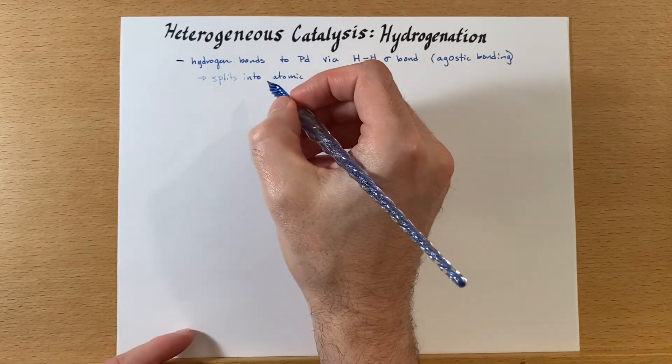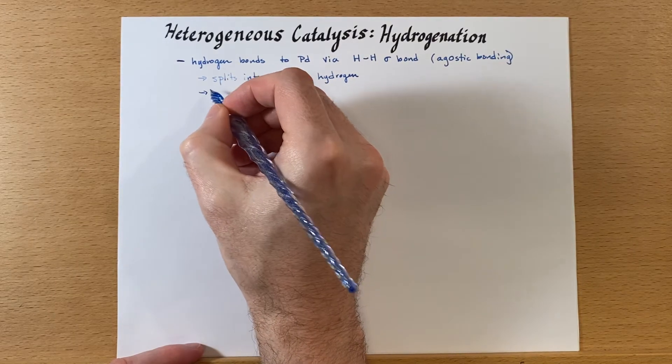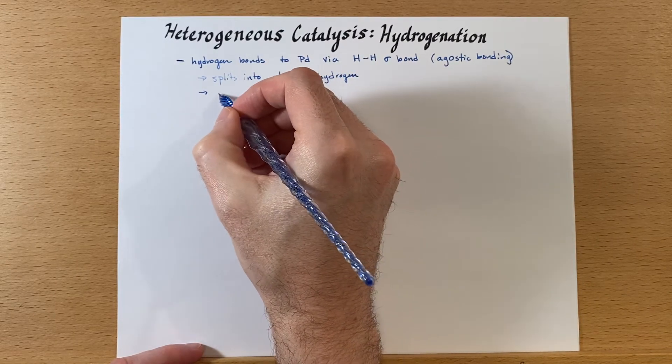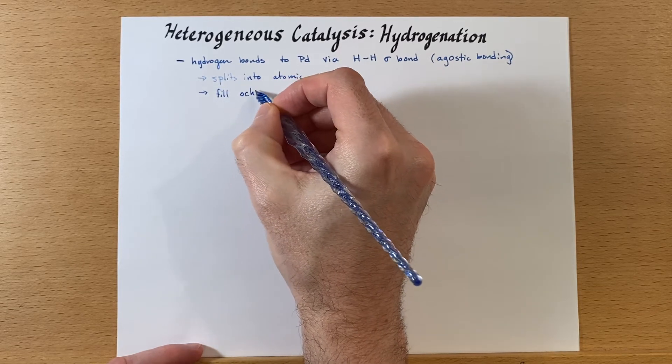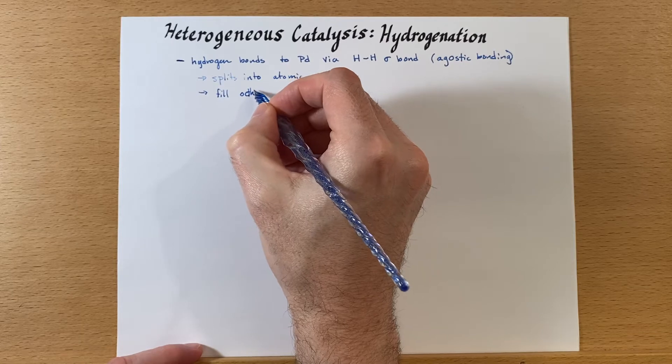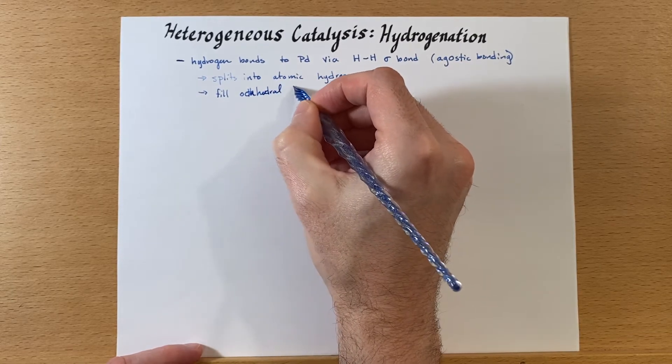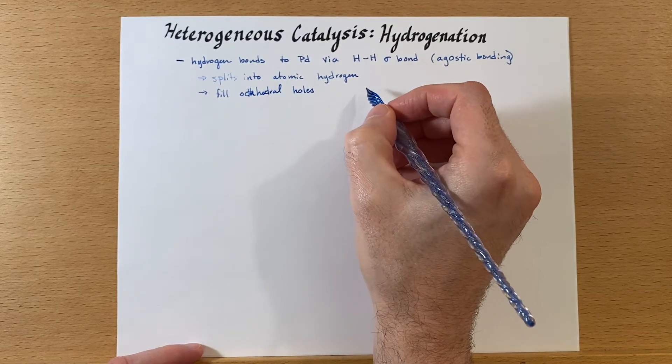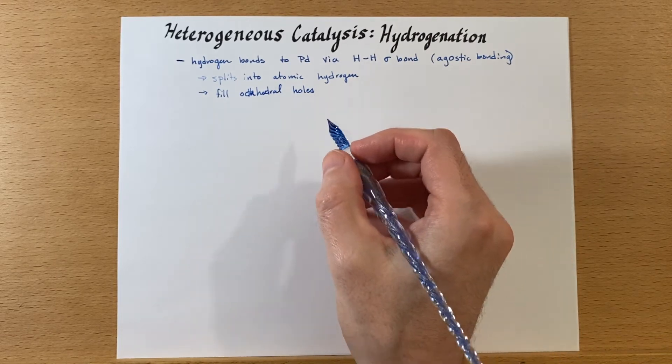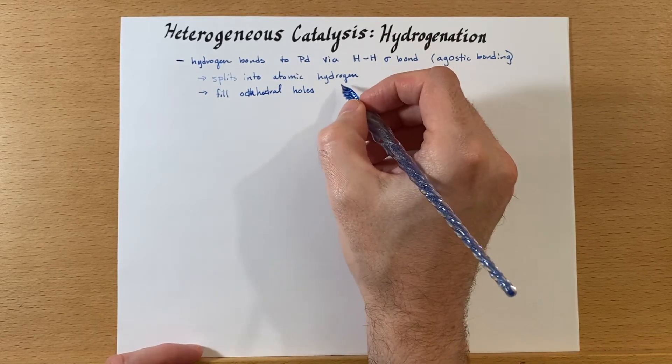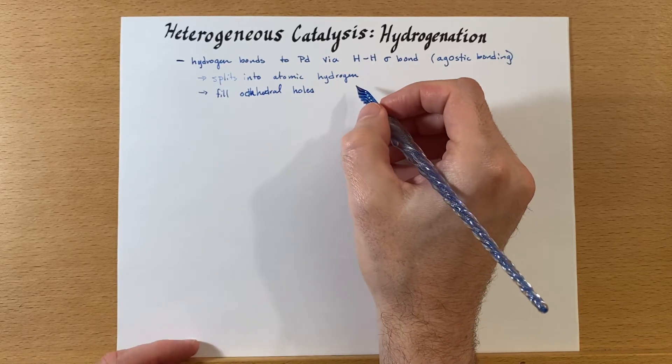Once this splits into atomic hydrogen it will fill octahedral holes. It is possible for the hydrogen to migrate around the palladium at a temperature of 50 Kelvin, so again very low energy process.